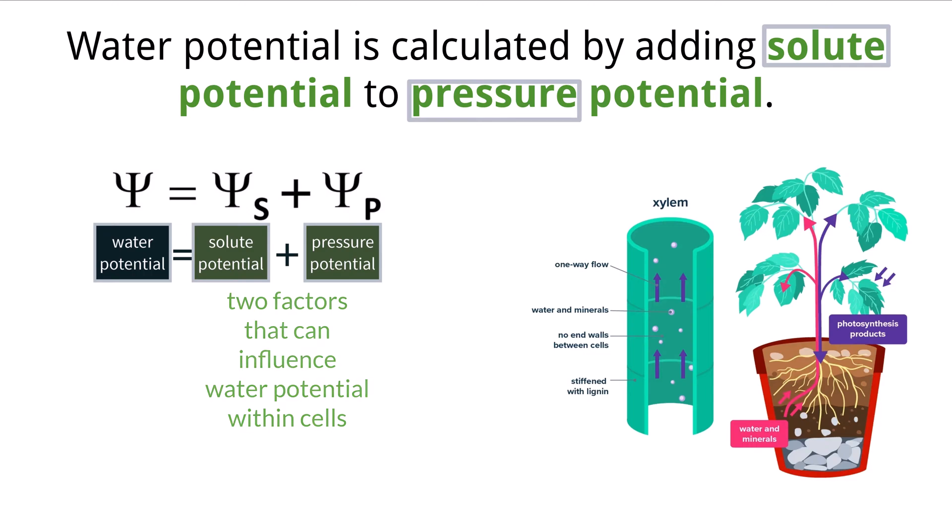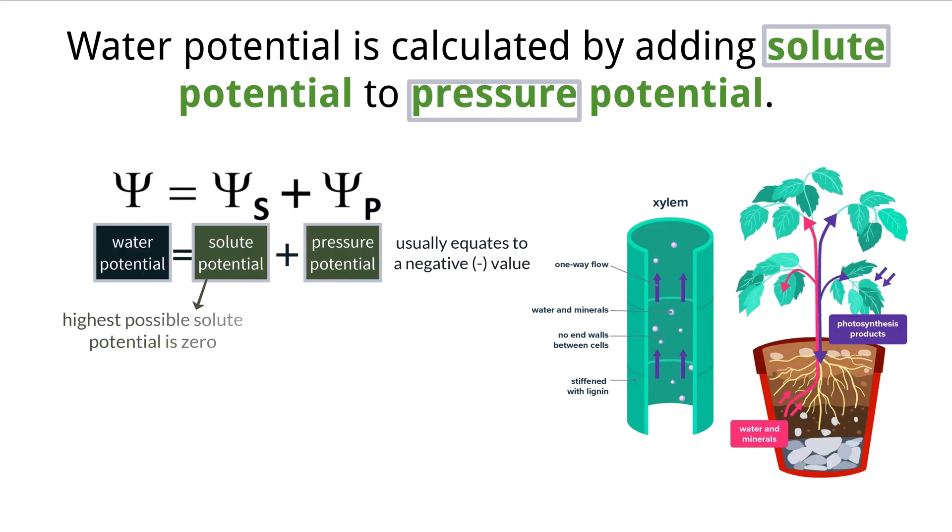Overall water potentials within cells are usually negative. This is because the highest solute potential that water can have is zero, and zero would mean that there are no solutes present and it is just pure water. When solutes are added to water, it decreases the potential driving it into the negatives.